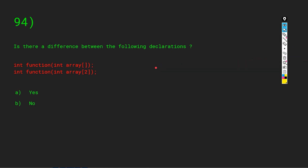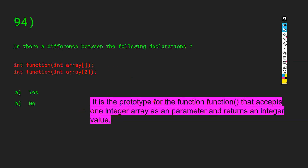Is there a difference between two function declarations shown? In C, we declare a function before defining it. The declaration tells the compiler: this function returns an int, has this name, and accepts an integer array as a parameter. This is a function prototype accepting one integer array and returning an integer. The answer is: no, there is no difference — both declarations are equivalent.